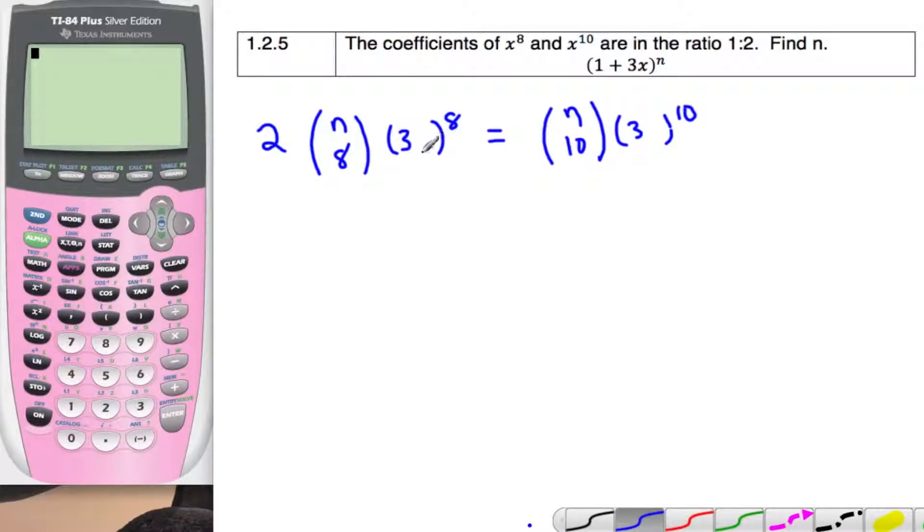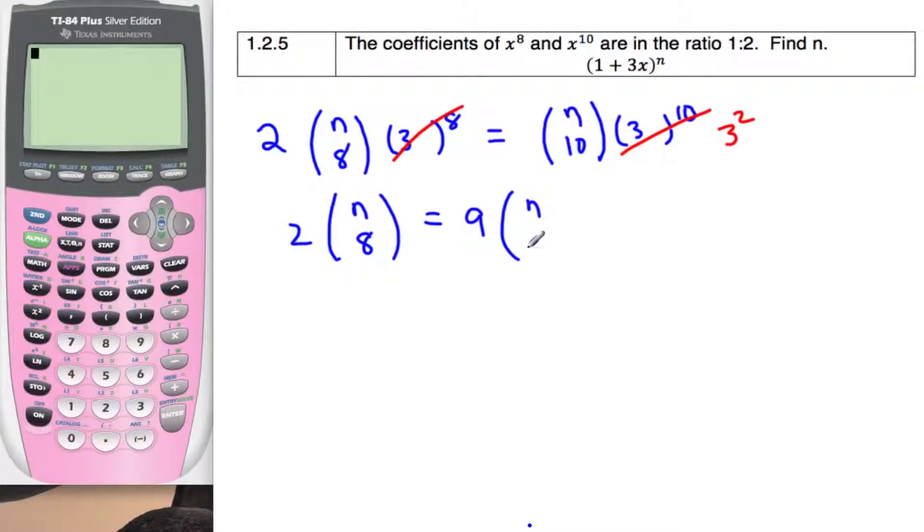All right, so now we can cancel. 3 to the 8th will be gone from both sides and we'll be left with 3 squared on this side, or 9. And so we have 2 n choose 8, which is equal to 9 n choose 10.